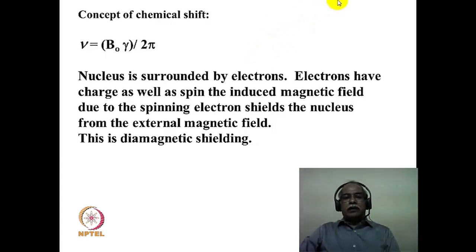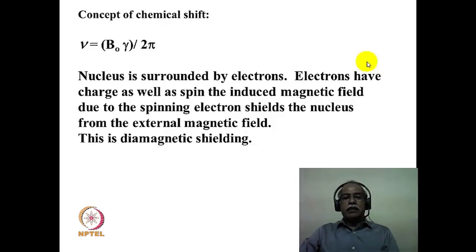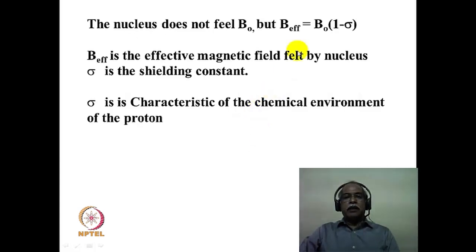The nucleus is surrounded by electrons, and electrons are charged particles that also spin in the induced magnetic field. Due to the spinning electron, it shields the nucleus from the external magnetic field. A spinning electron produces its own induced magnetic field, and this induced magnetic field opposes the external magnetic field — shielding the hydrogen from the external magnetic field. This is called diamagnetic shielding. So the nucleus actually does not feel the applied magnetic field; it feels less magnetic field, to an extent of B0(1 - σ), where σ is the shielding constant.